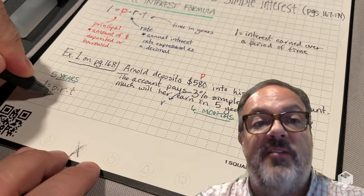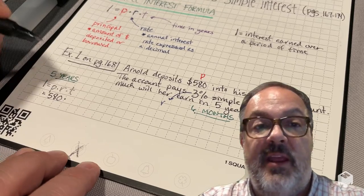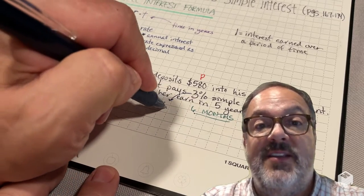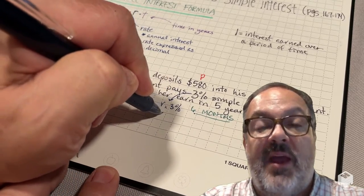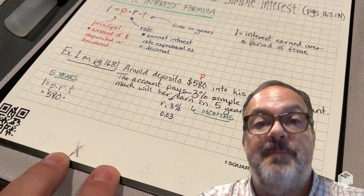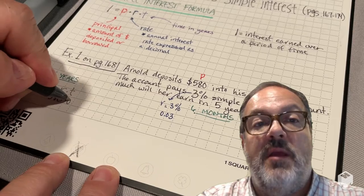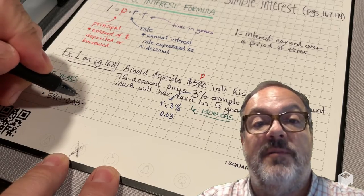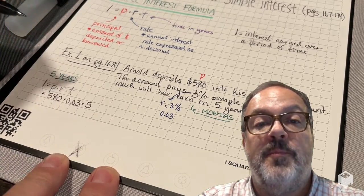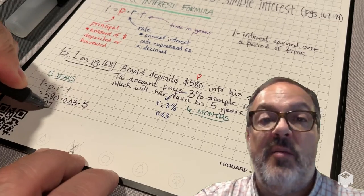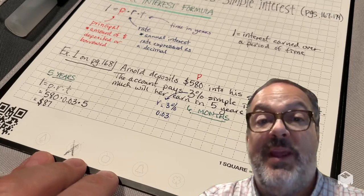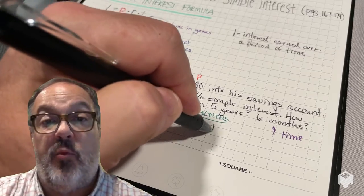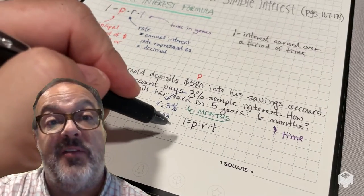Let's plug in the numbers. I'm going to put in 580, and multiply that by 3% expressed as a decimal, which is 0.03. Then I'm going to multiply those two numbers by the number of years, which is 5. So 580 times 0.03 times 5 gives us $87 of interest.